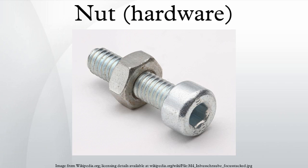A nut is a type of fastener with a threaded hole. Nuts are almost always used opposite a mating bolt to fasten a stack of parts together. The two partners are kept together by a combination of their threads' friction, a slight stretch of the bolt, and compression of the parts.